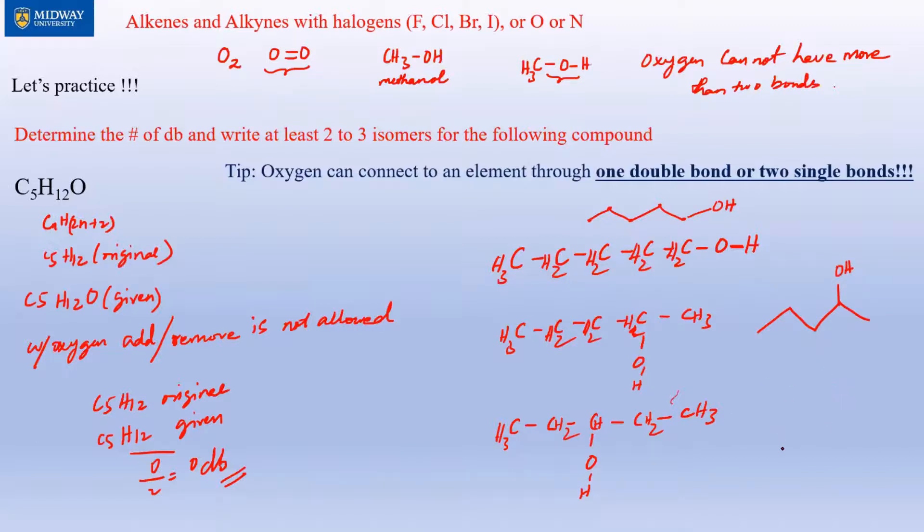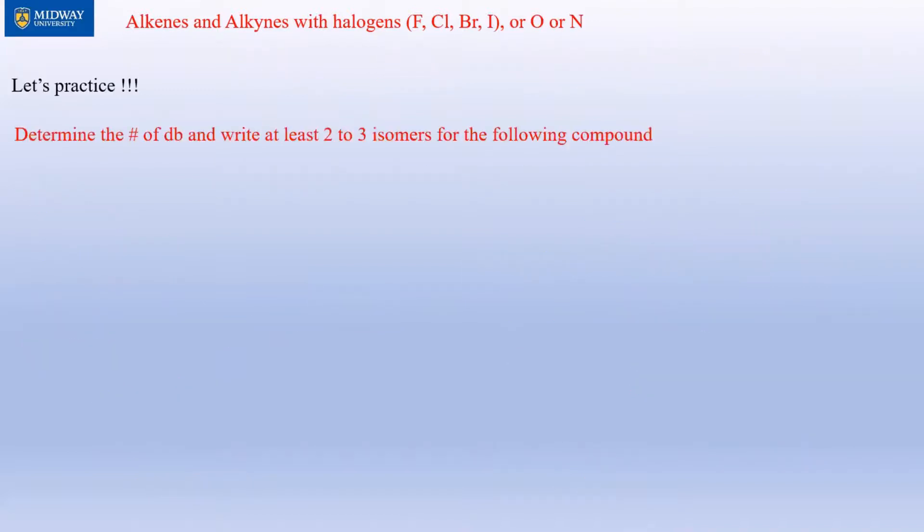Anything with the OH group is known as alcohol, just for your knowledge. We haven't learned this yet, but it doesn't hurt to know that. So if the value is zero, then you must make sure that you attach the hydrogen.